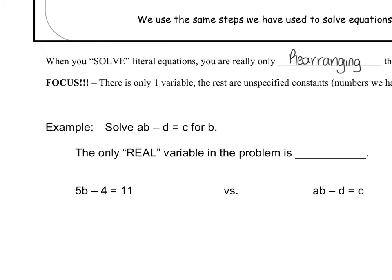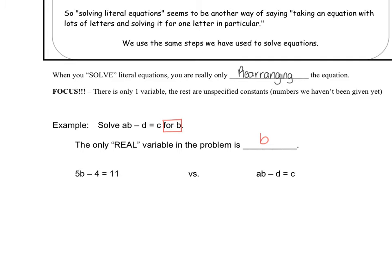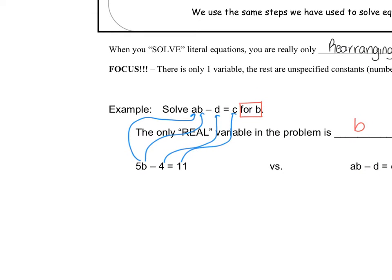So an example. Solve AB minus D equals C for B. The only real variable in this problem is B, because that's what I want to solve for. So whatever you want to solve for is always going to be your variable. In the past, if you look at it, so we want to solve AB minus D equals C. If you look, 5 is my A, B is my B, and 4 is my D, 11 is my C. So that's what we're doing today basically. We're basically just giving you an expression that contains variables and we want to solve it.